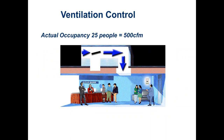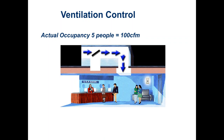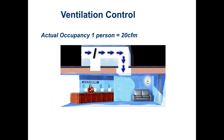Using that same bank example with a CO2 sensor on the wall: with all 25 people present, we'd bring in the code-required 500 CFM. With only five people, we'd modulate the ventilation damper back down to about 100 CFM. With just one person, we'd throttle it back to 20 CFM. In practice, we'd probably never go that low because there are other reasons to have outside air — like pressurization control. So we'll have minimums in the system, but occupancy will be the driving factor.